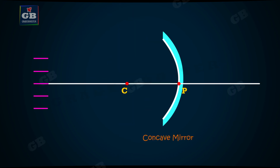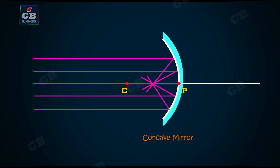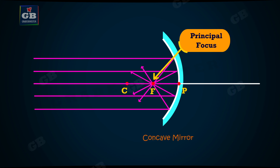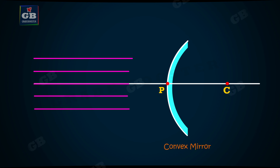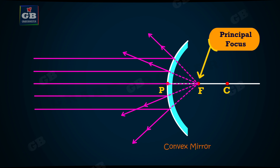Principal focus. If a number of light rays parallel to the principal axis fall on a concave mirror, they all meet or intersect at a point on the principal axis of the mirror. This point is called the principal focus of the concave mirror. In case of a convex mirror, the reflected rays appear to come from a point on the principal axis. This point is called the principal focus of the convex mirror. The principal focus is represented by the letter F.